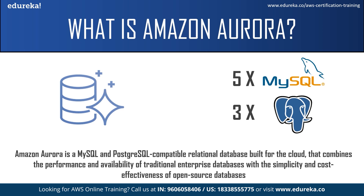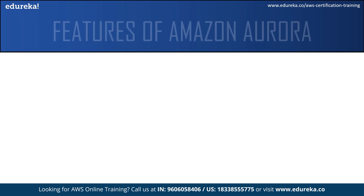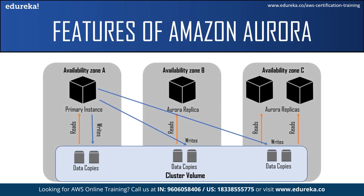Now let us understand what Amazon Aurora DB clusters are. An Amazon Aurora DB cluster consists of one or more DB instances and a cluster volume that manages the data for those DB instances. A DB instance is an isolated database environment running in the cloud, and a cluster volume is a virtual database storage volume that spans multiple availability zones, with each availability zone having a copy of the DB cluster data. The primary DB instance supports read and write operations and performs all data modifications to the cluster volume. Each Aurora DB cluster has one primary DB instance.